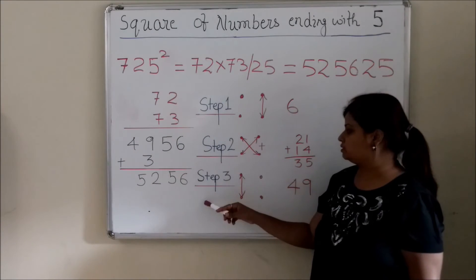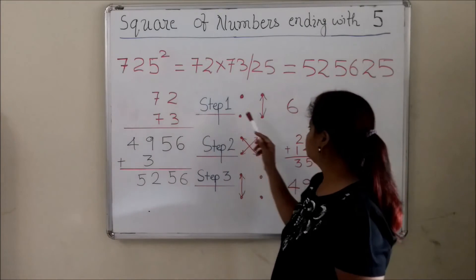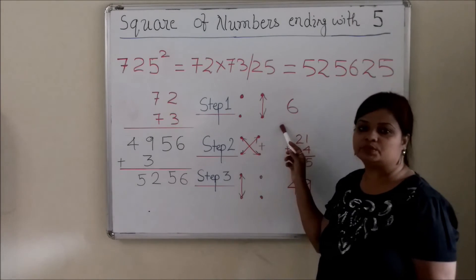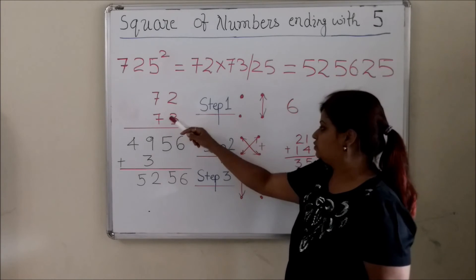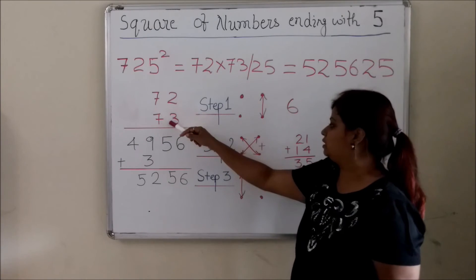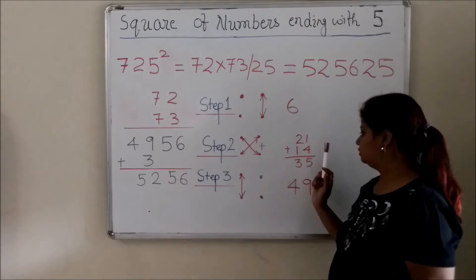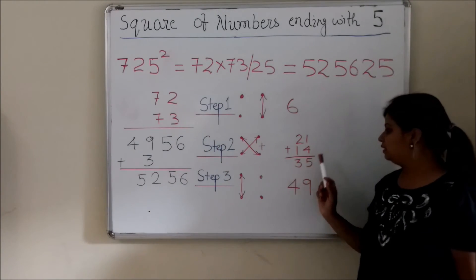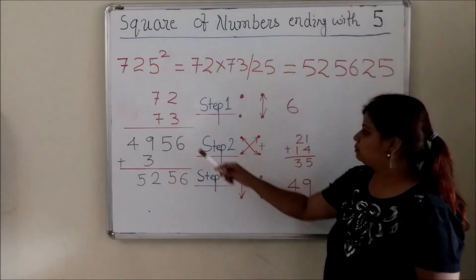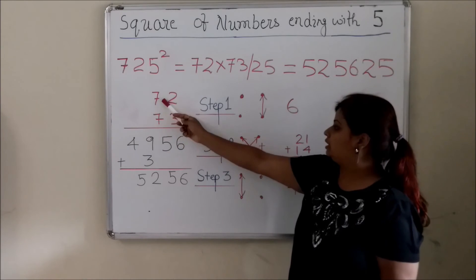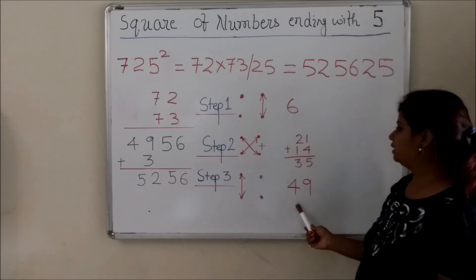So these are the 3 steps which we use to multiply these two numbers. So 2 and 3, that is the first step. So it results into 6. Now second step is crosswise. That's why it's called crosswise. So 7 is multiplied with 3 which is 21, and 7 is multiplied with 2 which is 14. Now 21 and 14 adds to 35. Now what is step 3? Step 3 is multiplying the first 2 digits, the 10th place. So 7 times 7 is 49.